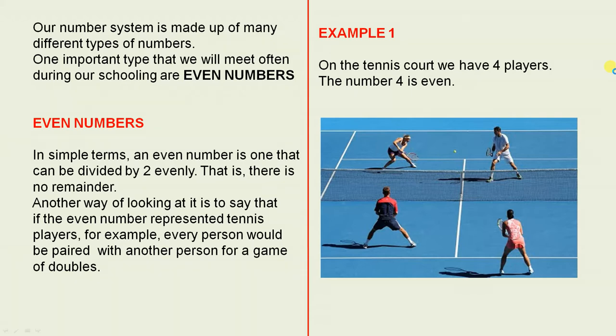Another way of looking at it is to say that if the even number represented tennis players, for example, every person would be paired with another person for a game of doubles.